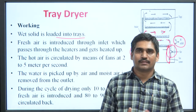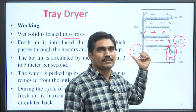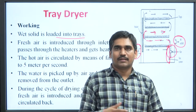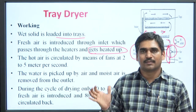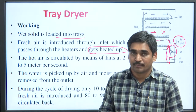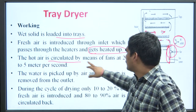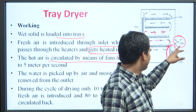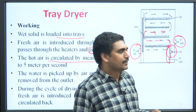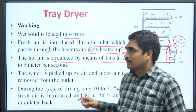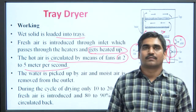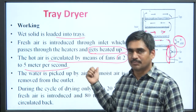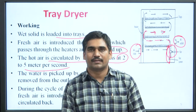Fresh air is introduced through the air inlet and passes through the heater, where the material gets heated. As the fresh air passes over the heater, it gets heated. This hot air is then circulated by means of a fan. The speed of this fan is 2 to 5 meters per second, at which the hot air is circulated inside the tray dryer.